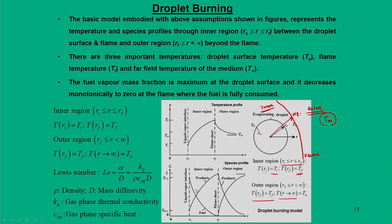Looking at the temperature distribution: at the liquid surface interface at radius Rs, the temperature is Ts. At the flame sheet at radius Rf, the temperature increases to the flame temperature Tf. Within the inner region, temperature increases and can reach the adiabatic flame temperature T_af. After the flame sheet the temperature drops back down toward T∞.